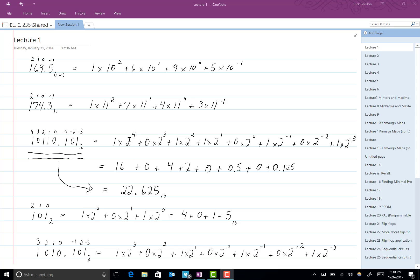2 to the 4th is 16, so 1 times 16 is 16. 0 times anything is 0. 1 times 2 squared, well 2 squared is 4, and 1 times 4 is 4. 2 to the 1st power is 2, 1 times 2 is 2. 0 times anything is 0. 2 to the negative 1 power is 1 over 2 or 1 half. So here we have 1 times 1 half, which is 0.5.